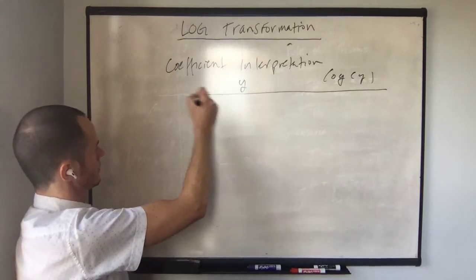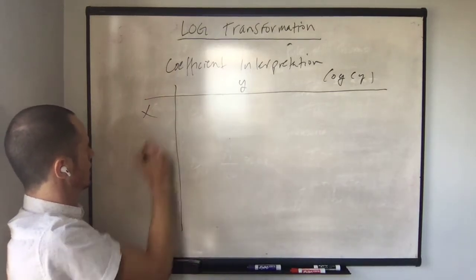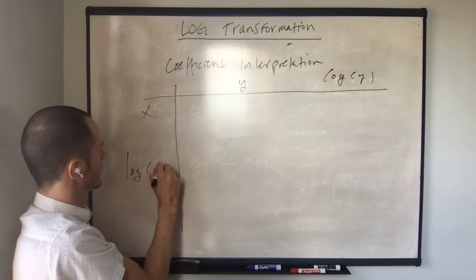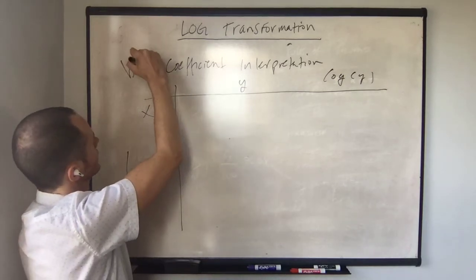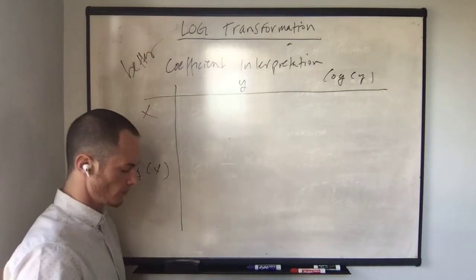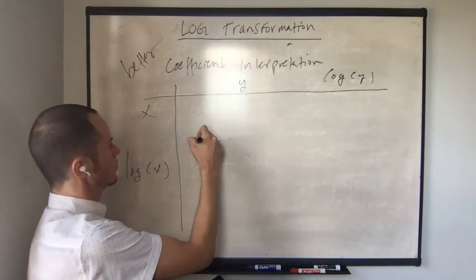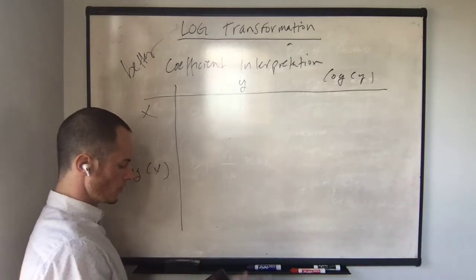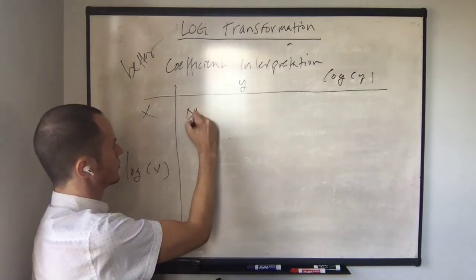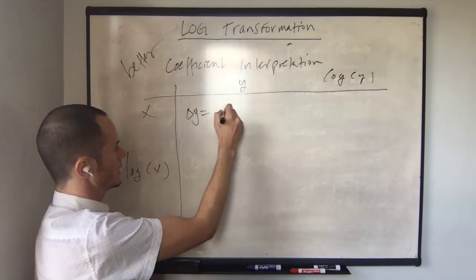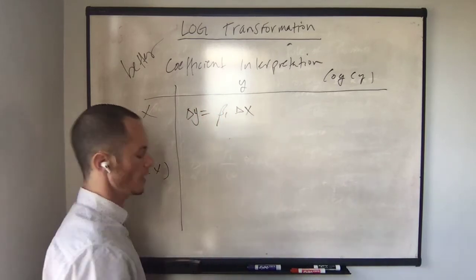We can do better than this. Better coefficient interpretation for both variables still in their original form, this is still change in y equal to beta 1 change in x.